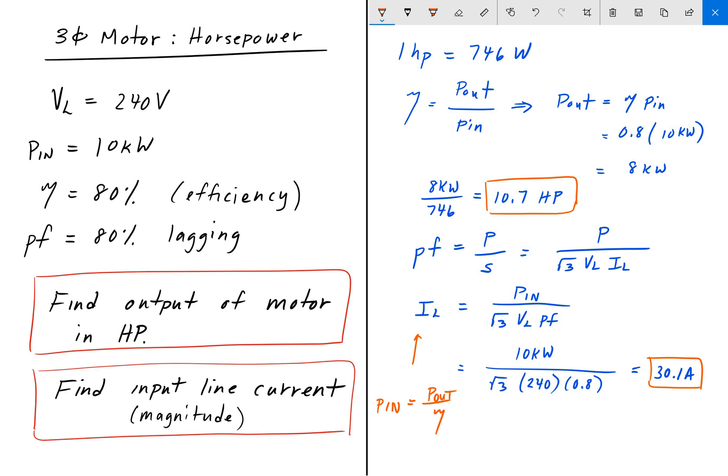Which simply would just mean that I L would be your rated power divided by the square root of 3, V line, power factor, and then multiply that by efficiency.